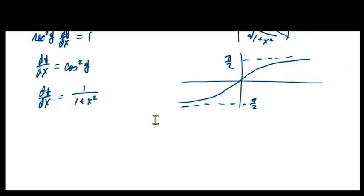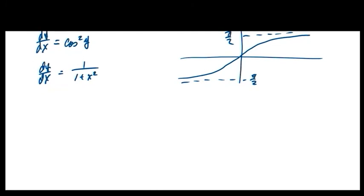Let's do inverse secant — that's the nastiest one. Say y = arcsec(x), which means sec(y) = x with these restrictions. The domain and range are first quadrant and second quadrant. Let's just say that much for now. What's the derivative of secant?